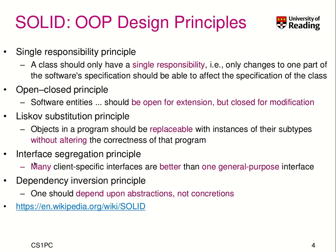Interface Segregation means you should have many specific interfaces instead of one general-purpose interface. Dependency Inversion means you should depend upon abstractions and not concretions — not specific implementations. Try to build very good abstractions and your life is so much easier. There is a lot behind this, and this was really a brief overview of what you should look for when you design an object-oriented program.